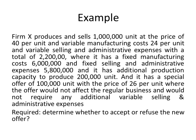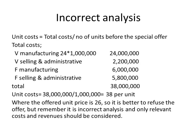Example about relevant analysis. The firm has a special cost of $800,000 and additional production capacity to produce 200,000 units. It has a special offer of 100,000 units with the price of $26 per unit, where the offer would not affect the regular business and would not require any additional variable selling and administrative expenses. Required: determine whether to accept or refuse the new offer.